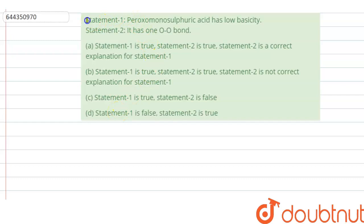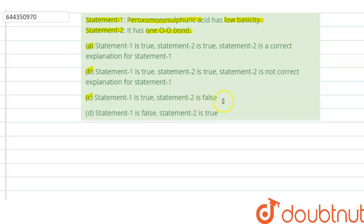Hello everyone, let us solve this question. The question says: Statement 1 — per oxo monosulfuric acid has low basicity. Statement 2 — it has one O-O bond. Option A: both statements are true and statement 2 is a correct explanation for statement 1. Option B: both statements are true but statement 2 is not a correct explanation for statement 1. Option C: statement 1 is true, statement 2 is false. Option D: statement 1 is false, statement 2 is true. We have to check whether these statements are true or false.